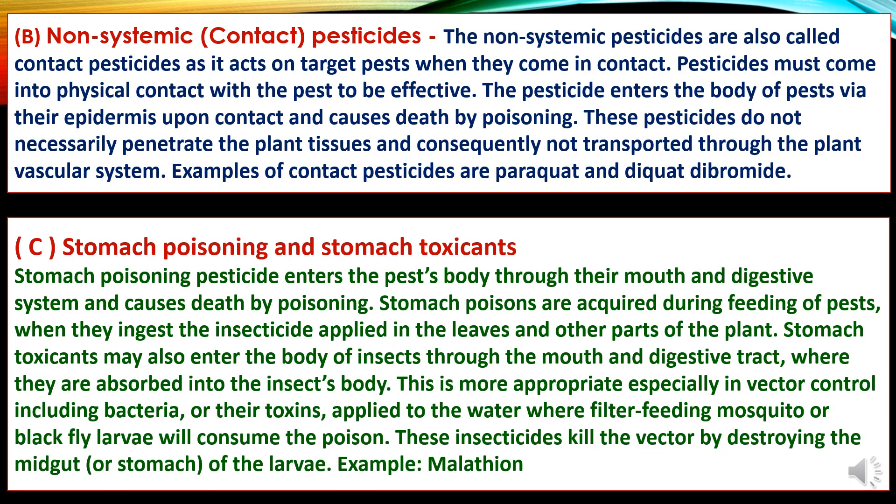The second type is non-systemic or contact pesticides. These are also called contact pesticides as they act on target pests when they come into contact. The pesticide must come into physical contact with the pest to be effective. The pesticide enters the body of pests via their epidermis upon contact and causes death by poisoning. These pesticides do not necessarily penetrate the plant tissues and consequently are not transported through the plant vascular system. Examples of contact pesticides are paraquat and diquat dibromide.